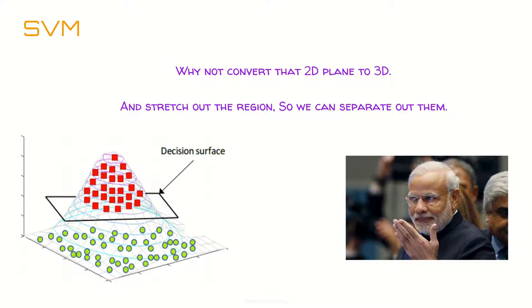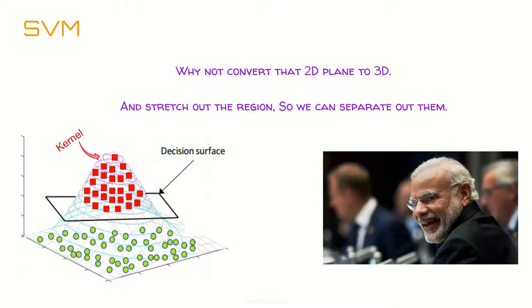If you want to cut those red imprints from the cloth, you just pull up that part and cut through it with scissors. That's exactly how the kernel trick works. Think of the kernel as a stretchy rubber cloth — you can stretch it anywhere in 3D and create a decision surface to separate your data. This way, non-separable data in 2D becomes separable in 3D.